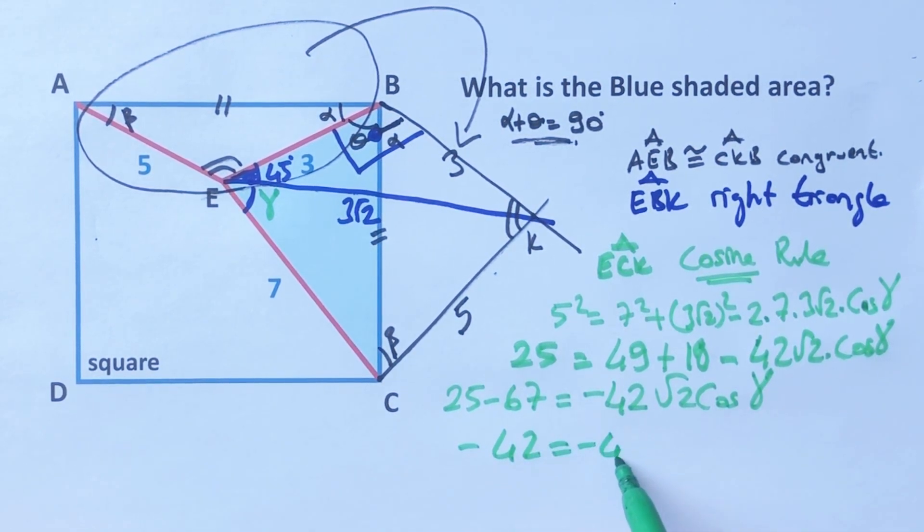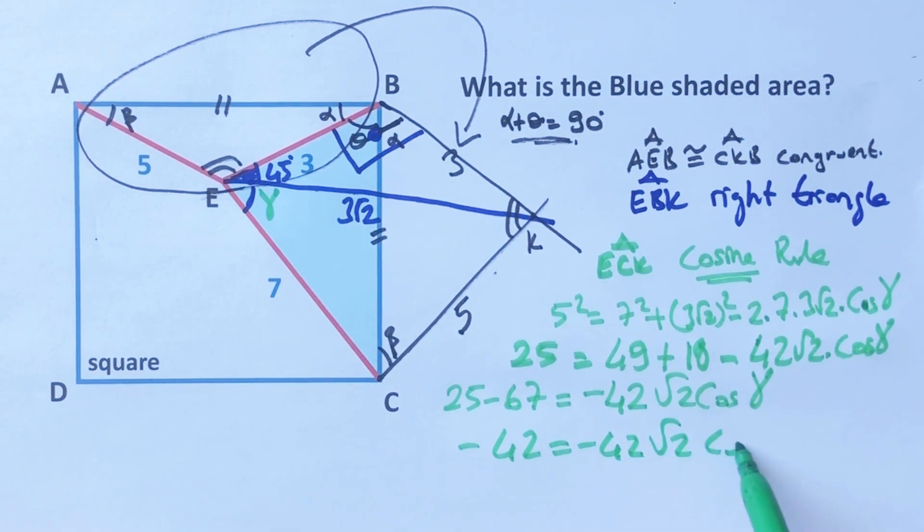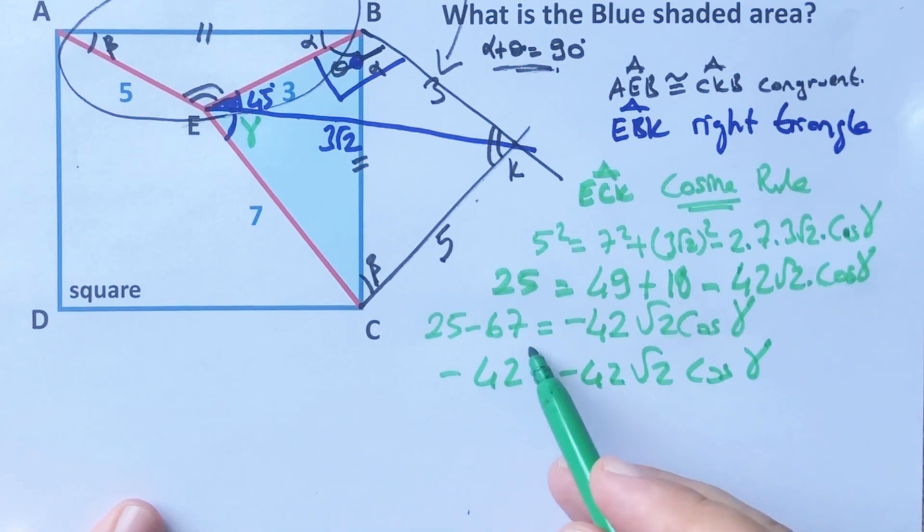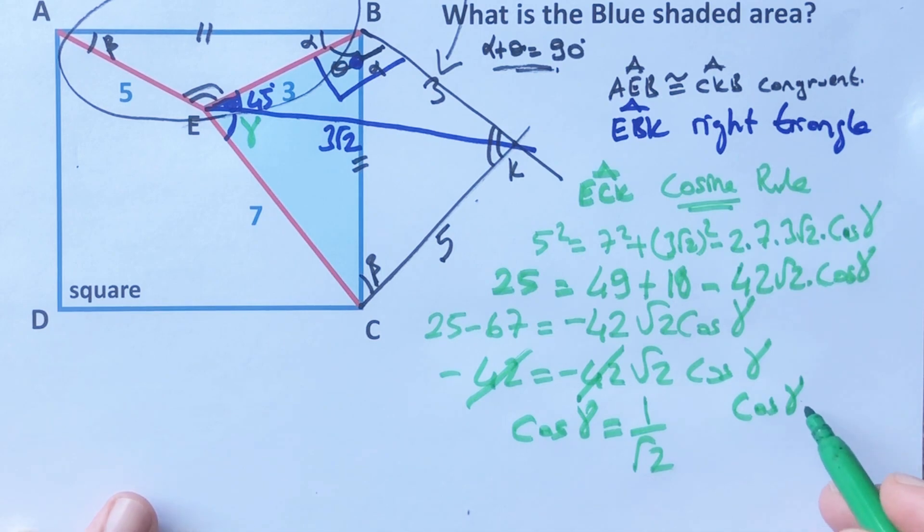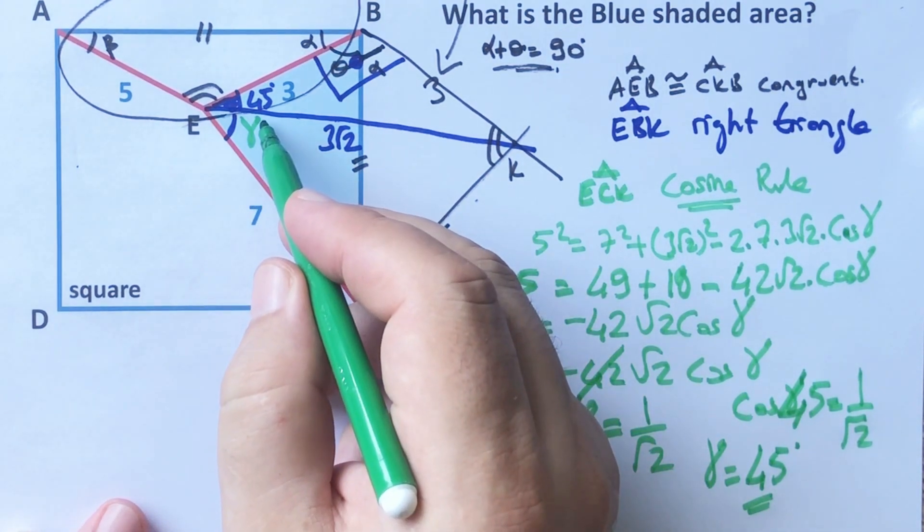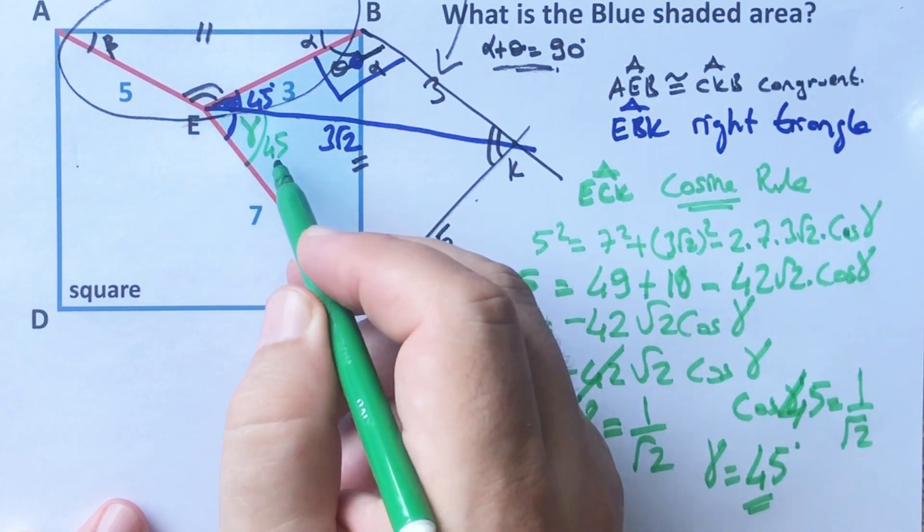So minus 42 equals minus 42 root 2 cosine gamma. These cancel, so cosine gamma equals 1 over root 2. We know that cosine 45 equals 1 over root 2. Therefore gamma equals 45 degrees. Okay, here is 45 degrees.